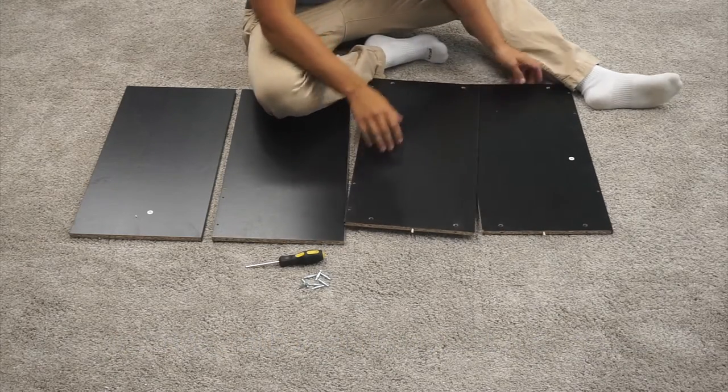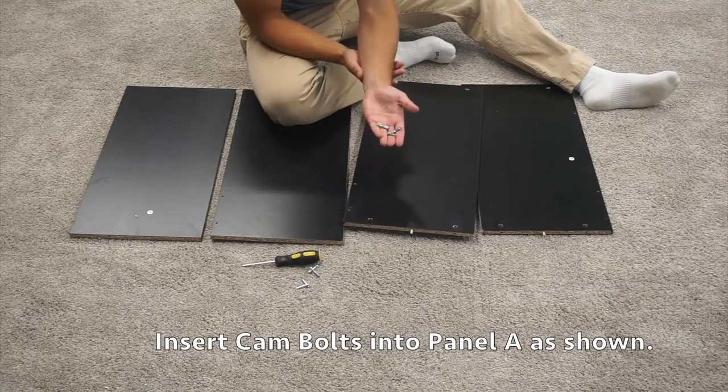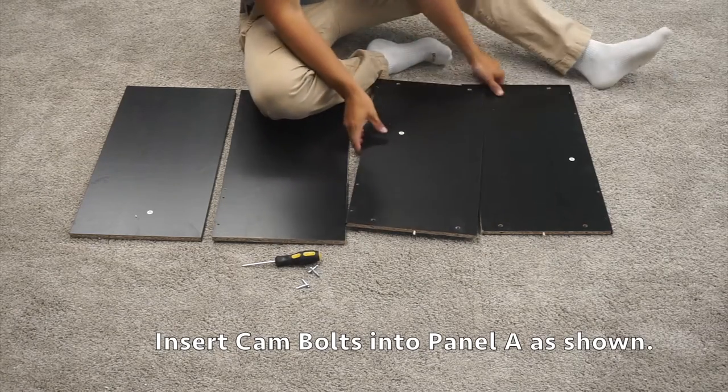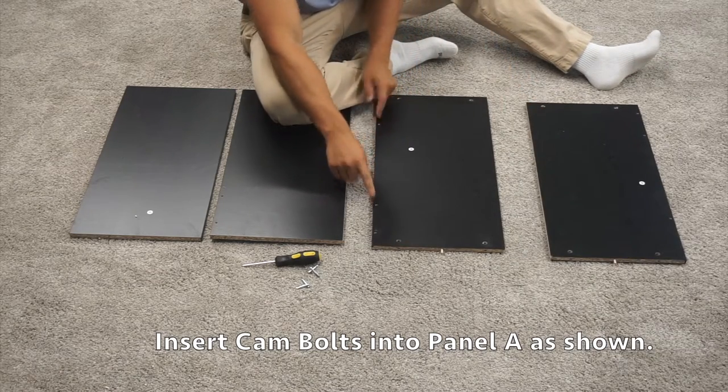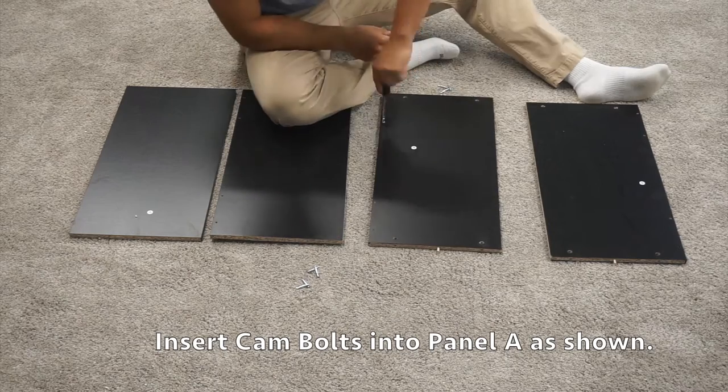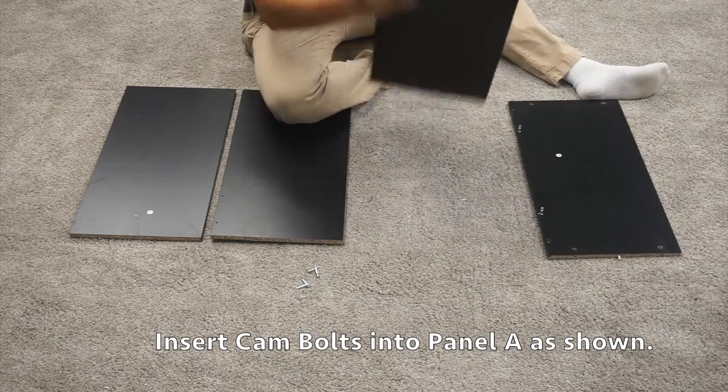Next, you'll want to take four of these cam bolts and you'll want to screw them in to these two middle pre-drilled holes on the side of the panel. Repeat this for the other A panel.